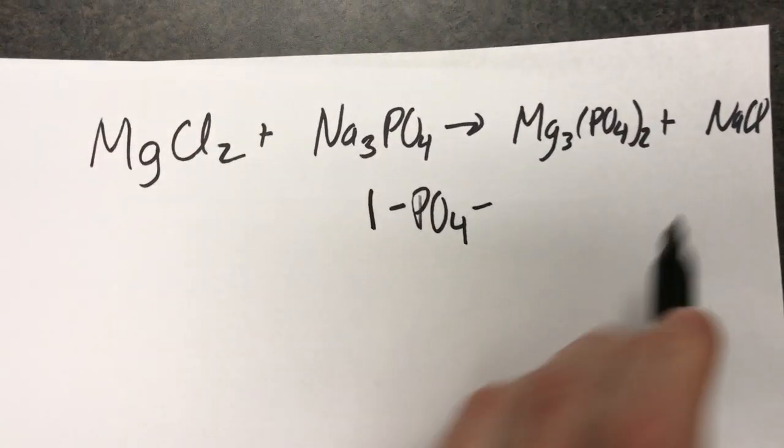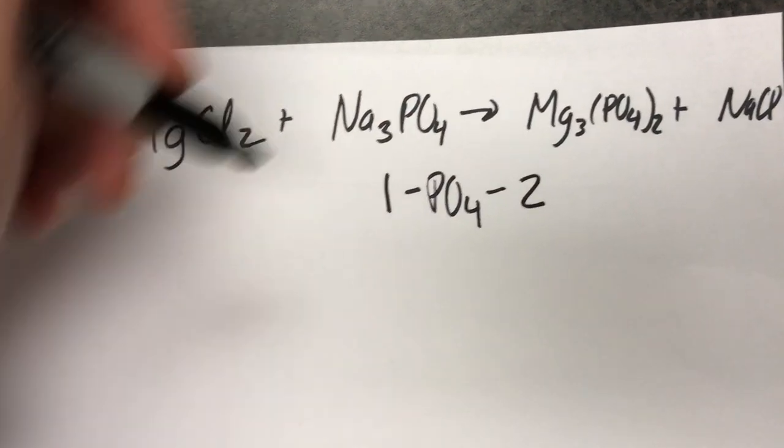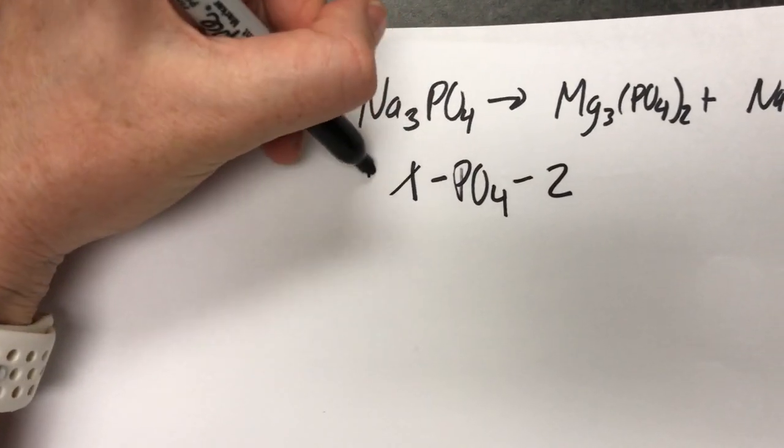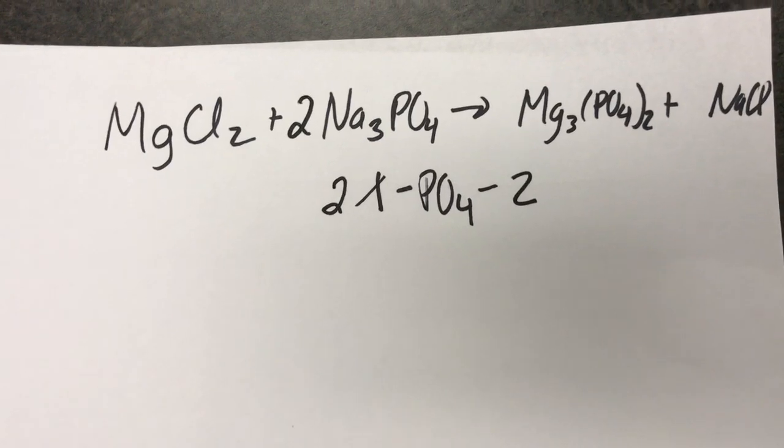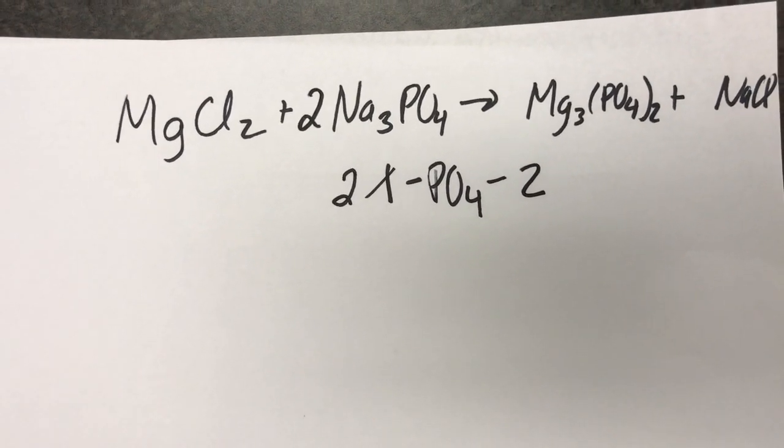On my left hand side I have one. On my right hand side I have two. Two divided by one is two. And now we have two phosphates on each side. After that it really doesn't matter.